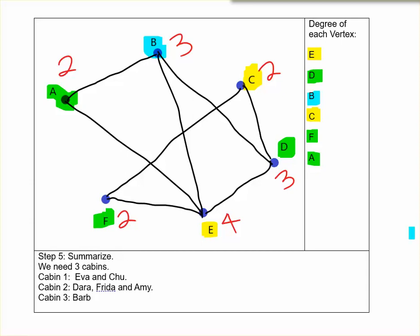Or you might notice that sometimes I had choices. For example, if I were going to do D or B first. If we actually did B before D, we would still need three cabins but our groupings would be slightly different. Or you might notice in this case if we were trying to balance them out, you could see B and F are not connected. So F could have actually been blue as well. So if I were running the camp I would probably say well we'll let Dara and Amy be together and we'll put Barb and Frida in cabin three.